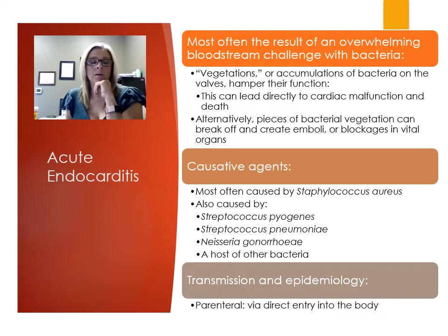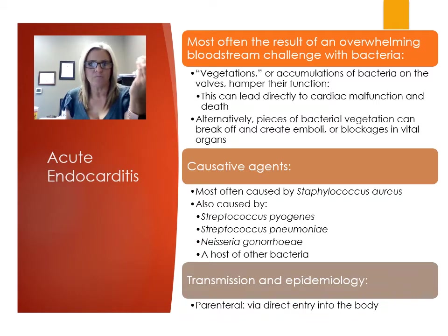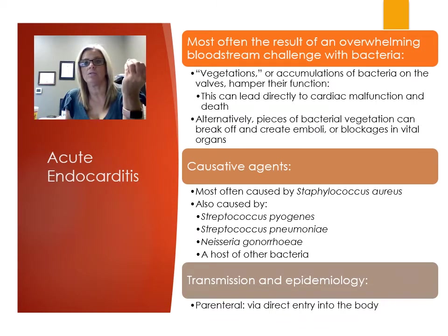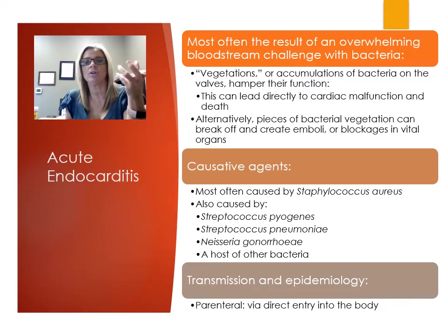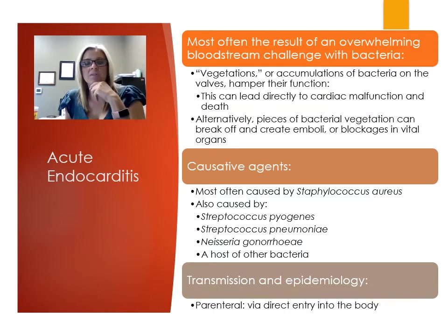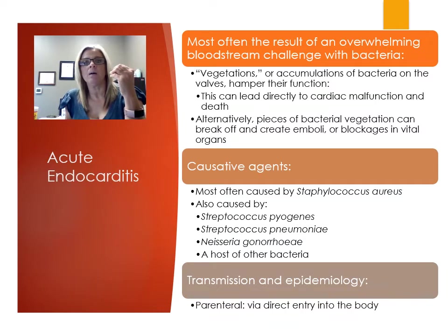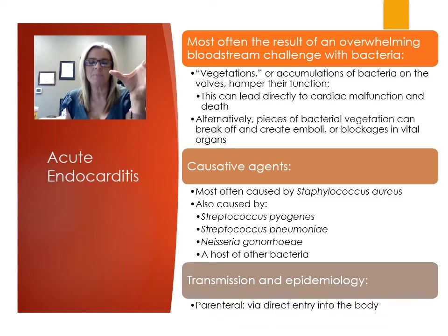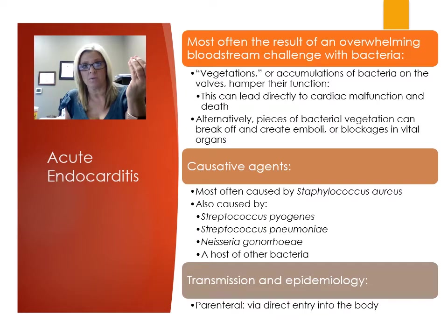Acute endocarditis usually occurs because of an overwhelming presence of bacteria in the bloodstream. Certain bacteria can colonize the heart valves, and you can have vegetations — accumulations of bacteria on the valves — that hamper their function. This can lead directly to death due to cardiac malfunction. Pieces of that clumped bacteria can break off and create an embolism, blocking vital organs. Bacterial colonies serve as a source of bloodborne bacteria and can break off and invade the blood.